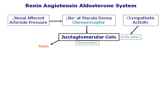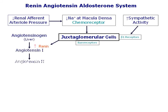Under certain physiologic conditions, like when blood volume is low, the juxtaglomerular cells increase renin secretion. Plasma renin cleaves angiotensinogen to form angiotensin-1, which is then converted to angiotensin-2 by angiotensin-converting enzyme, or ACE, in the capillaries of the lungs and other organs.